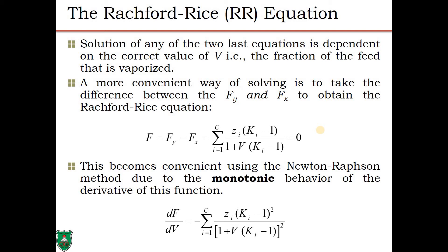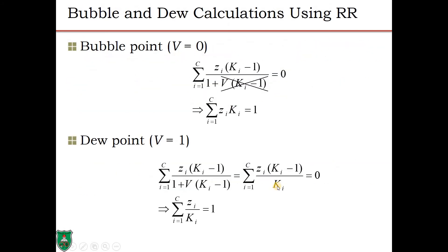Because the Rachford-Rice equation is monotonic — guaranteed to be monotonically increasing with V — any numerical method will converge to the correct solution regardless of the initial guess. Fx and Fy do not have this feature, which is why we prefer the Rachford-Rice equation. You may use the Newton-Raphson method or any solver of your choice.